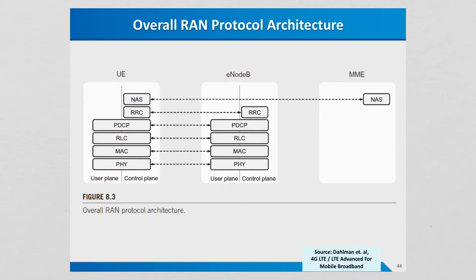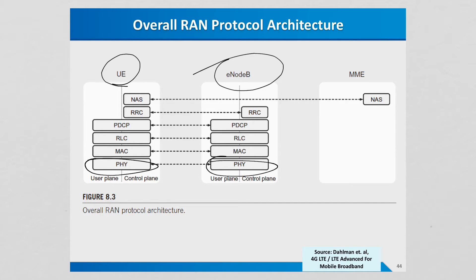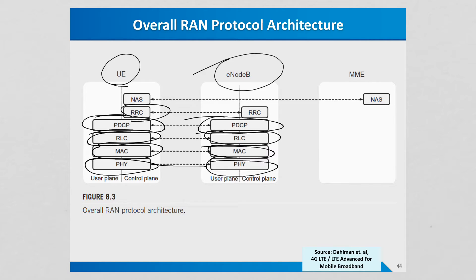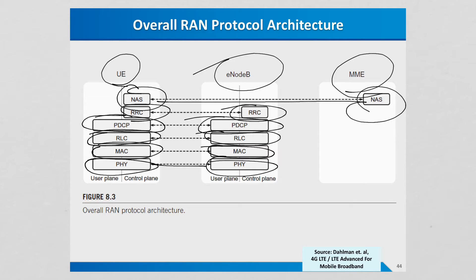LTE uses a layered architecture. At the lowest level, you have a physical layer. The UE — your mobile terminal — and the E-Node-B — your base station — communicate through a peer-to-peer connection at the physical layer. Going up layers, much like the OSI stack, you have a MAC layer (medium access control), RLC (radio link control), PDCP (packet data convergence protocol), and RRC (radio resource control). Finally, there's a non-access stratum, which bypasses the E-Node-B and allows the UE to communicate directly to the MME.